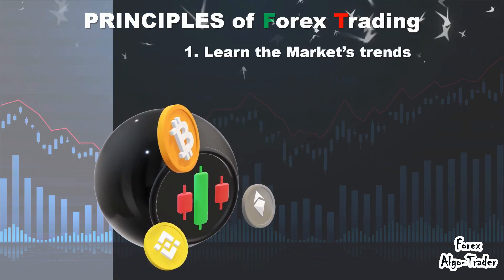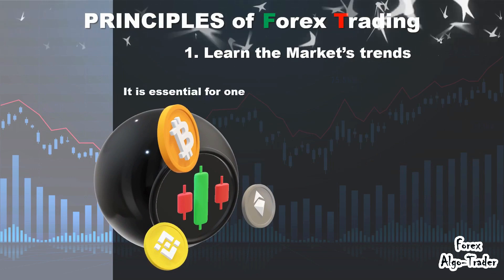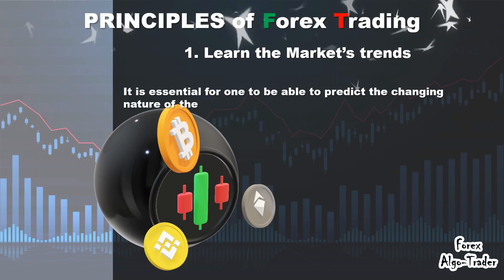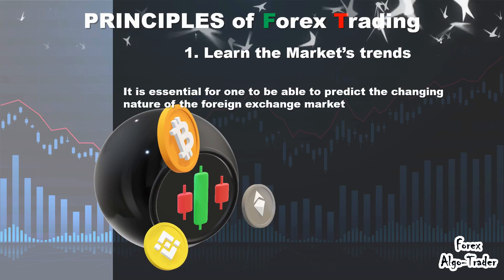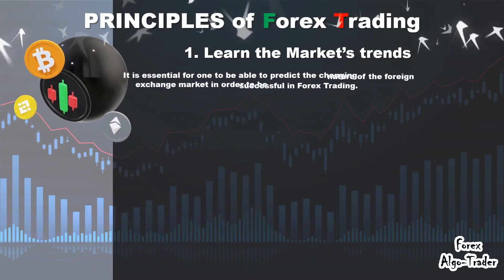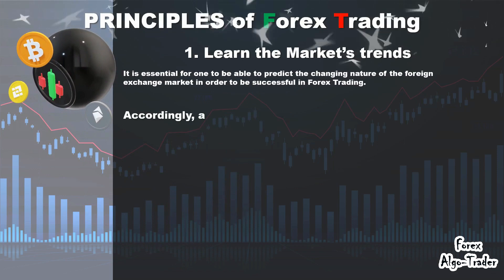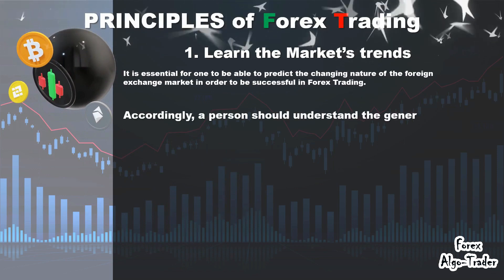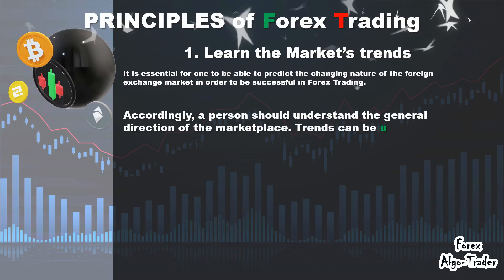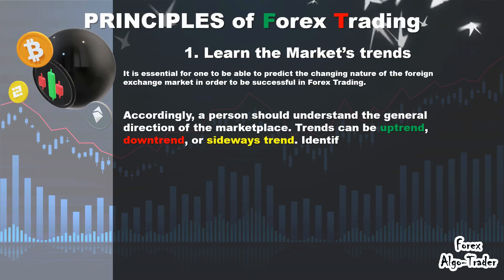1. Learn the market's trends. It is essential for one to be able to predict the changing nature of the foreign exchange market in order to be successful in Forex trading. Accordingly, a person should understand the general direction of the marketplace. Trends can be uptrend, downtrend, or sideways trend. Identifying a pattern can help a person profit, as he or she will be able to trade with the trend.